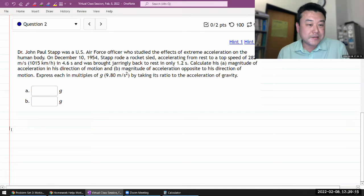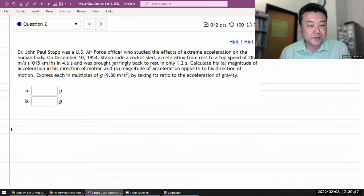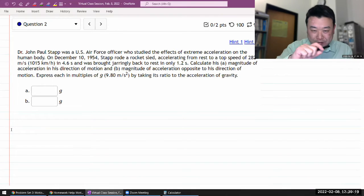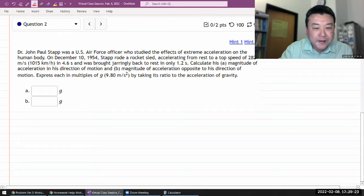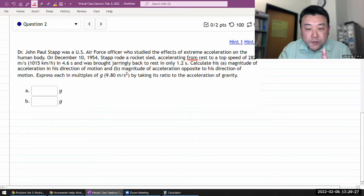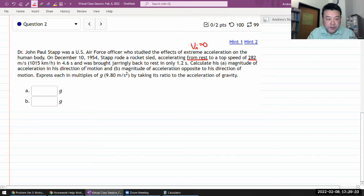So this is what the question says. It says someone was an officer with extreme acceleration. Let me just mark it up. I don't care about the date. Okay, accelerating from rest. Okay, some initial speed of zero to a top speed of this. Okay, so some final speed.